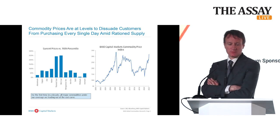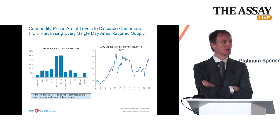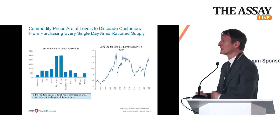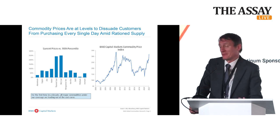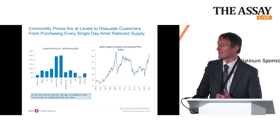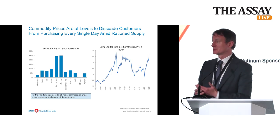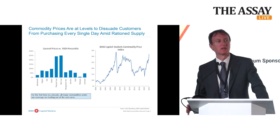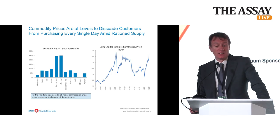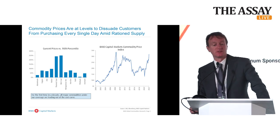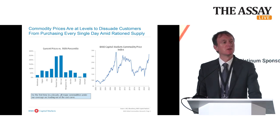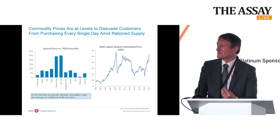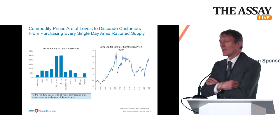Commodity prices — just look at that left-hand chart. That's commodity prices versus the 90th percentile of the cost curve. For the first time in a decade effectively, all of them are trading at levels to convince someone not to buy commodities on any single day. That's the function of the supply constraints we've had in this market — obviously a function of both the underinvestment we've seen over recent years and the fact that demand has still been relatively strong.